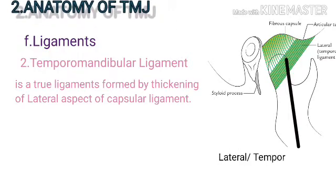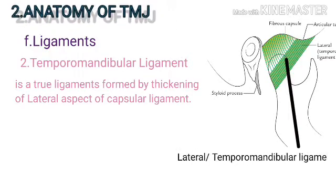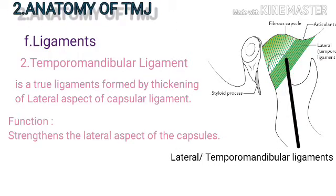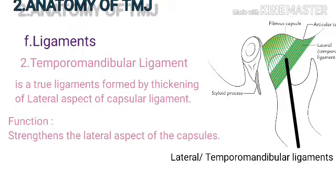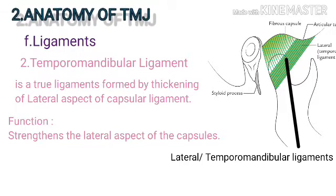The temporomandibular ligament is a true ligament formed by thickening of the lateral aspect of the capsular ligament. Its function is to reinforce the lateral aspect of the capsule.